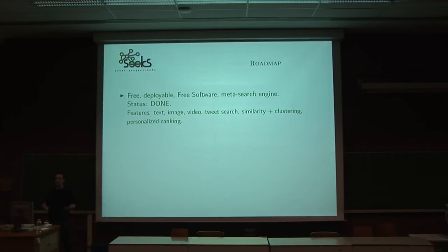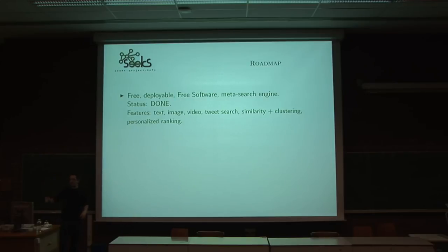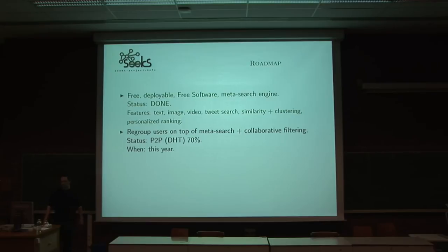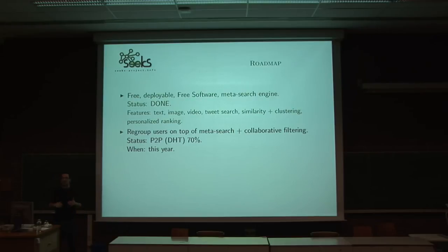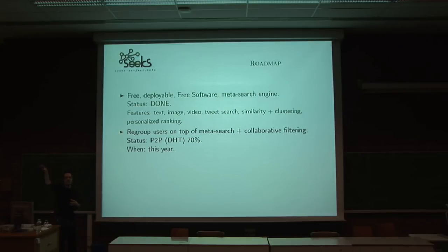Here's the roadmap. The first step was to build what seems to be the only free software metasearch engine, and this is done. We can search for text, image, videos, and tweets. There are some nice tools built in, and you can install this on your own laptop or desktop. The second step, coming up soon, is the arising of a peer-to-peer network that connects all Six nodes together. Whatever you're doing on your machine — if you let it — will have an impact on other people searching similar things, and this impact will be proportional to the similarity of your profile to other users' profiles.